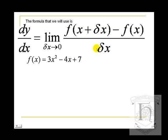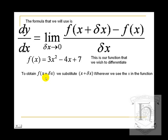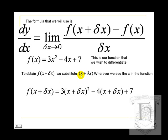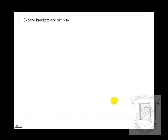f(x) is 3x squared minus 4x plus 7 — the same as our original y, just written using function notation. f(x + delta x) is obtained by substituting x + delta x wherever we see x in the original function. So 3x squared becomes 3(x + delta x) all squared, minus 4x becomes minus 4(x + delta x), and the plus 7 remains the same because it is independent of x.